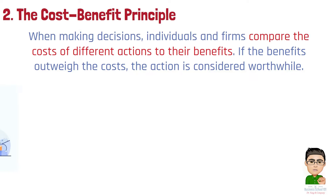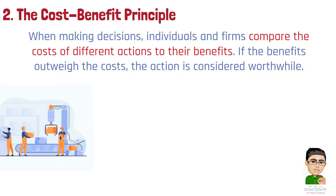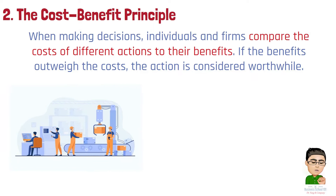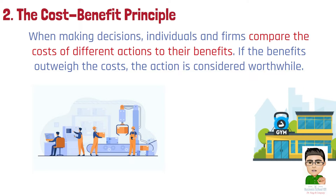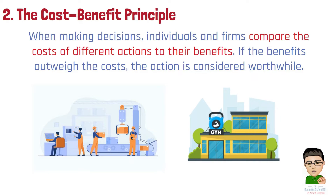Example 1: A business owner considering the purchase of new, more efficient machinery will compare the costs of the investment to the potential savings in production costs and increased output. Example 2: An individual deciding whether to purchase a gym membership will weigh the monthly fee against the potential health benefits and increased quality of life.